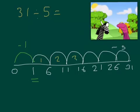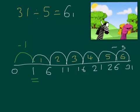3, 4, 5, 6 jumps. And we have 1 number left over. So, our answer to 31 divided by 5 equals 6, remainder 1.